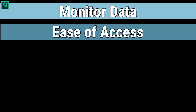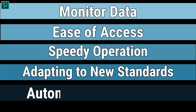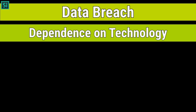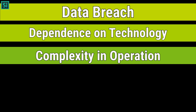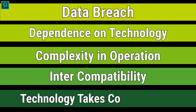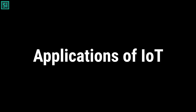The advantages of IoT include monitoring data, ease of access, speedy operation, adapting to new standards, and automation and control. The disadvantages of IoT include data breach, dependence on technology, complexity in operation, intercompatibility issues, and technology taking control of life.